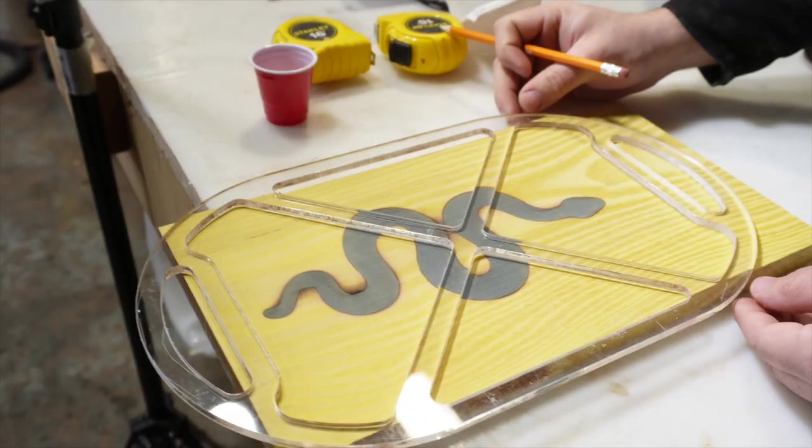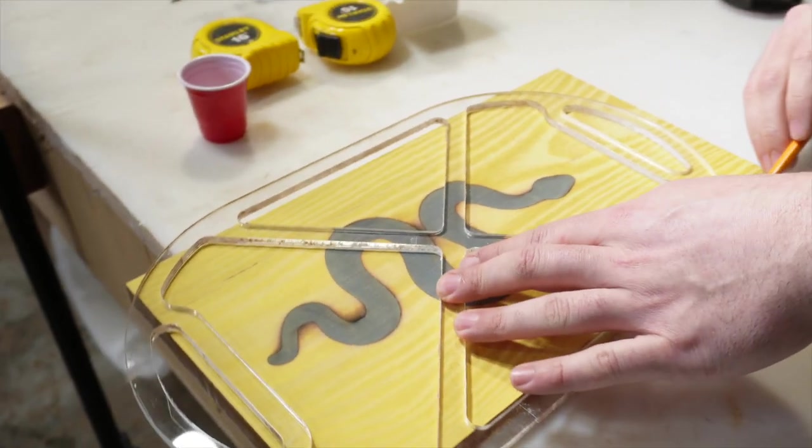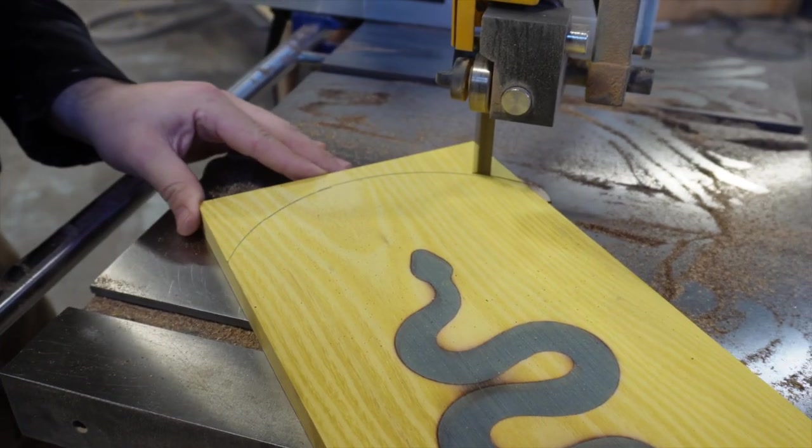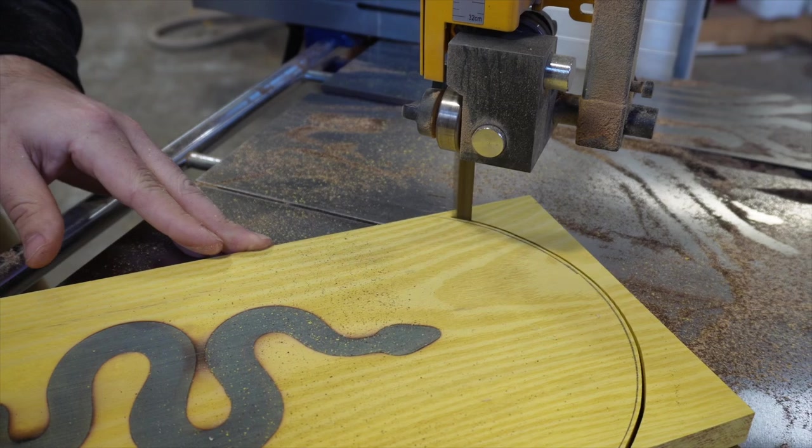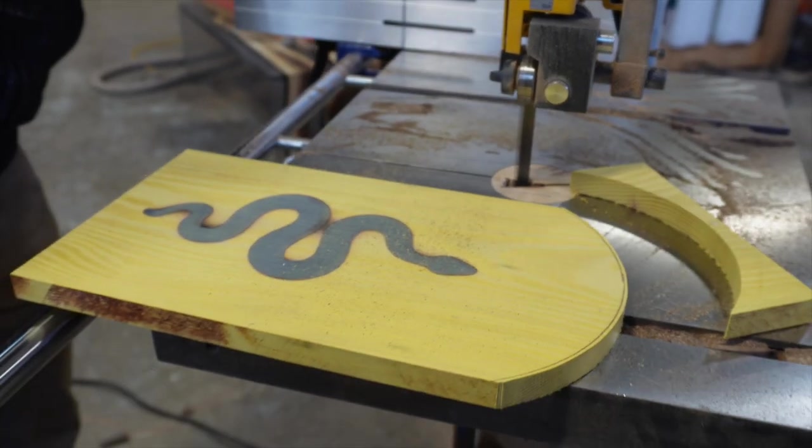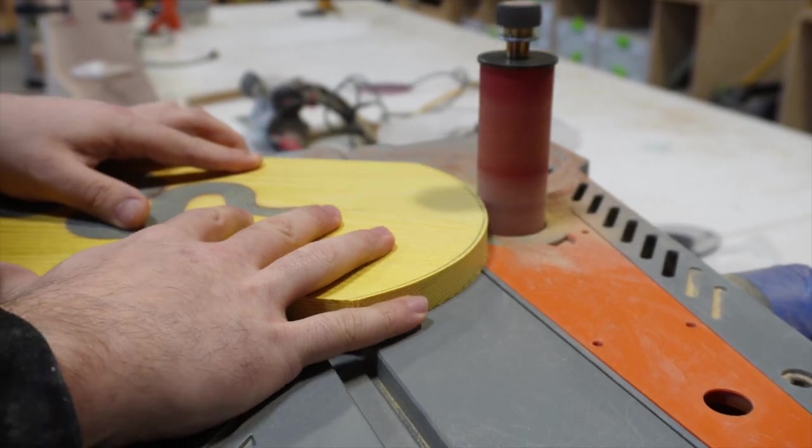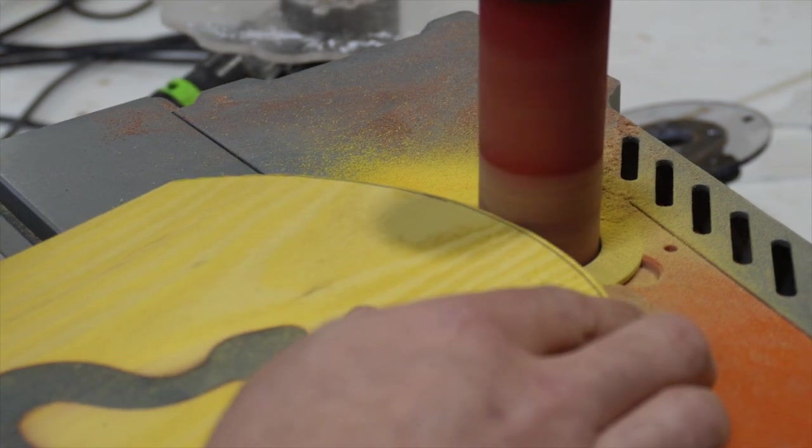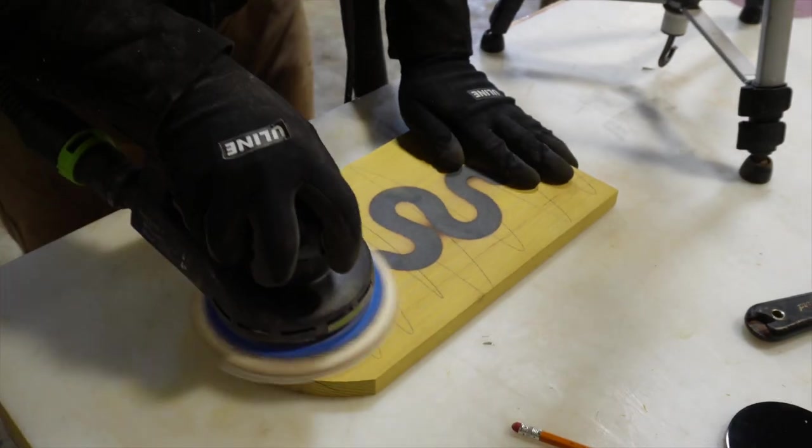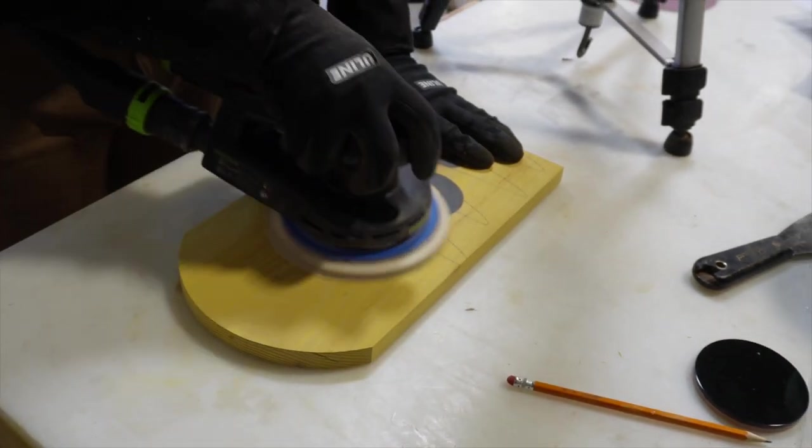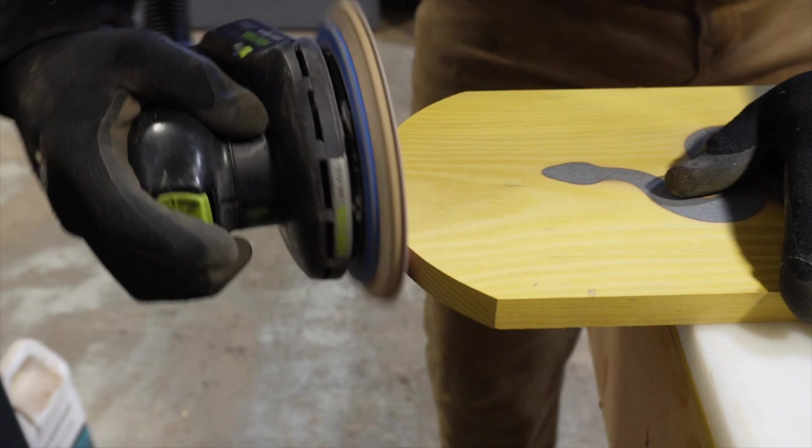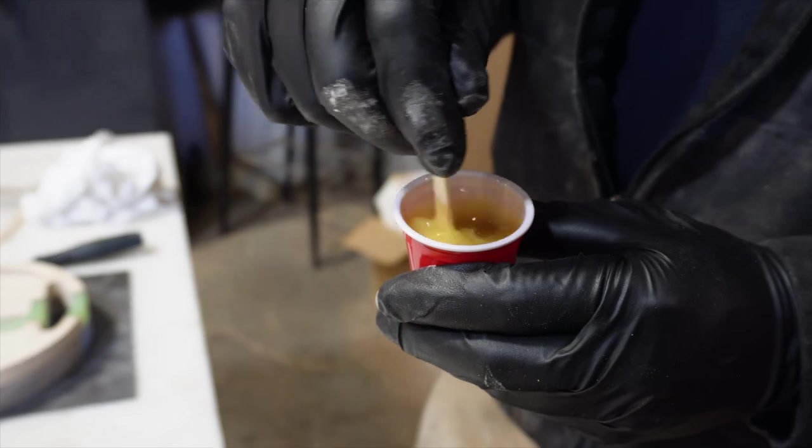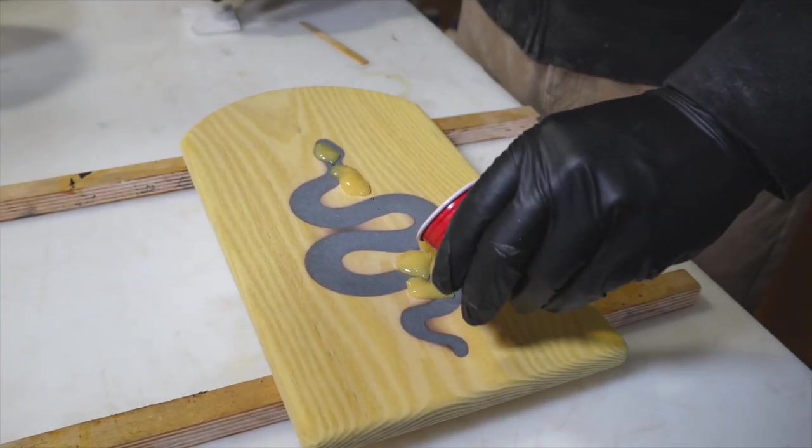After a couple passes through the drum sander, we're going to use this template to get a nice radius on the top, and then we're going to cut that on the bandsaw. And after a few passes on the spindle sander, we're ready to sand this piece up and get it closer to the finish line. Now that we've got our piece sanded up, we're ready to apply some Rubio Monocoat oil finish.